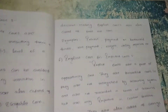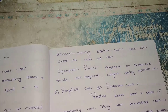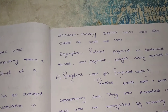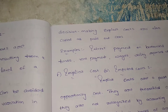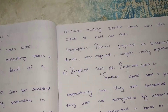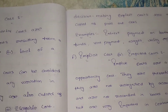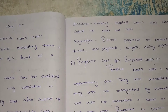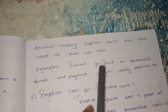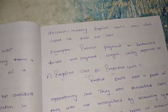Explicit costs also guide in economic decision making. Not only for preparation of final accounts, but also while we want to take any decision regarding our organization, explicit cost is very important. The sunk cost is not considered in decision making, but explicit cost is considered. Explicit cost is also called as paid out cost.